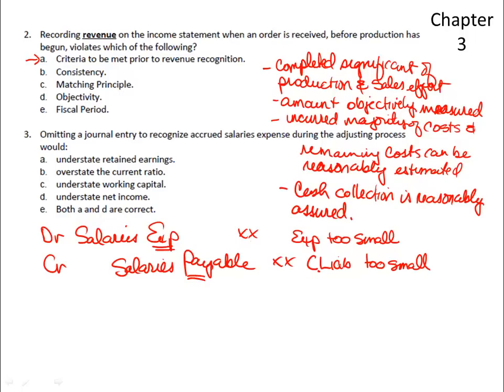So that's what it's in violation of. The other three criteria that also must be met: the amount of the sale must be objectively measured — in other words, you've agreed upon a negotiated sales price. The third is that you've incurred the majority of costs and the remaining costs can be reasonably estimated — the end is in sight as to how much this project is going to cost. And finally, that cash collection is reasonably assured, meaning the customer not only has the means to pay but also has the intent to pay.